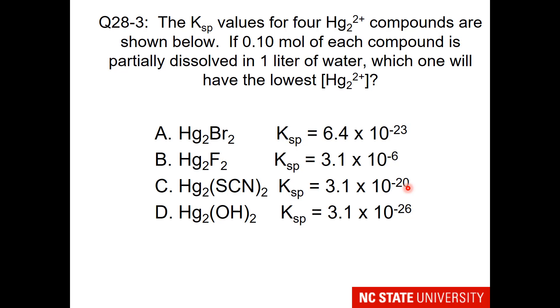Here's a concept question to see if you're following. If we put 0.1 mole of each compound in 1 liter of water such that it partially dissolves and reaches equilibrium, which one will have the lowest concentration of mercury 1?